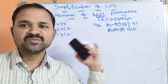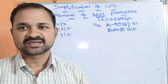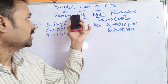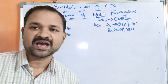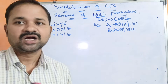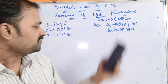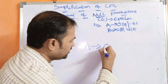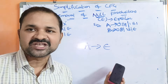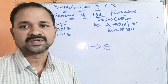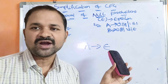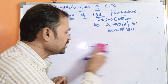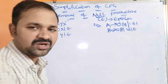Now let us see about removal of null productions. Null production can also be called as epsilon production in simplification of context-free grammar (CFG). If a production is of the form A implies epsilon, then we say it is a null or epsilon production. Our target is to eliminate null productions. We have two examples to solve.